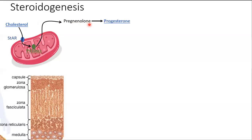Pregnenolone is further modified to progesterone. I'm going to simplify this diagram to help you make sense of it, so some of the enzymes are omitted. Progesterone is going to be used in the three different zones of the adrenal cortex and ultimately synthesized into different steroids.